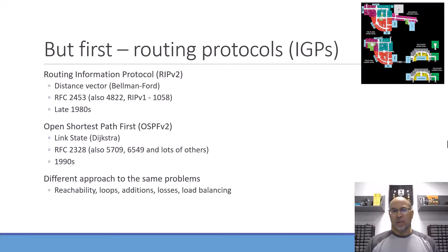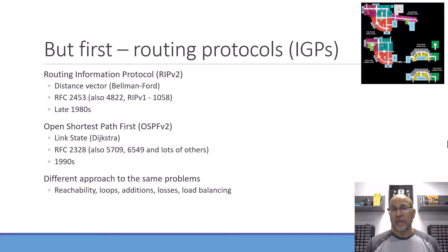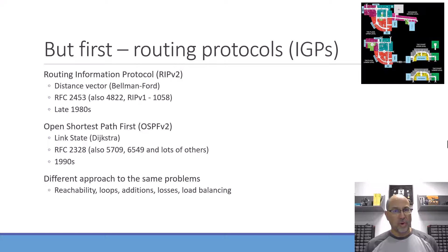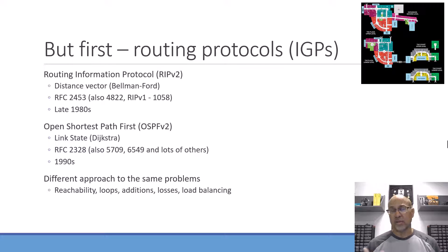Another type of protocol is what we call a link state protocol. The best example is the Open Shortest Path First protocol, OSPF V2, found in RFC 2328. It came after RIP and is based on the Dijkstra algorithm. One of the most significant things about OSPF is that it takes into account more than just hop count like RIP does. Link state protocols can factor in the speed of the link, utilization, cost of the link, and things like that.